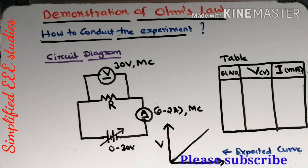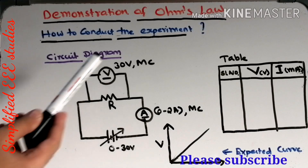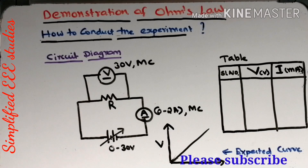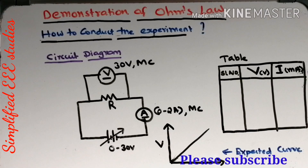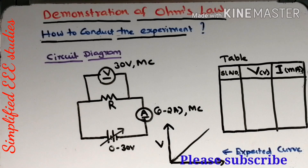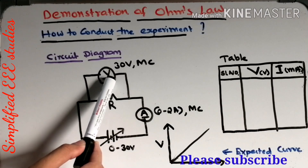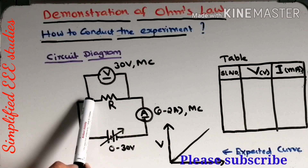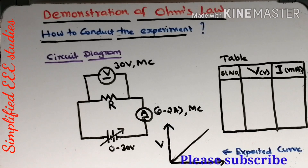Now let's see how to conduct the experiment and the procedures. You have to rig up the circuit in the virtual lab. There is a facility to connect the circuit in the virtual lab, and you have to do it according to the procedure. First and foremost, rig up the circuit as shown in the diagram. The voltmeter will always be connected in parallel to the particular element.